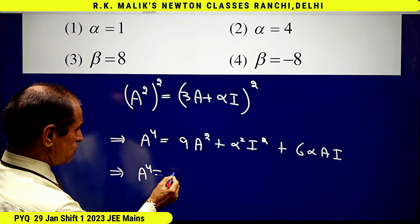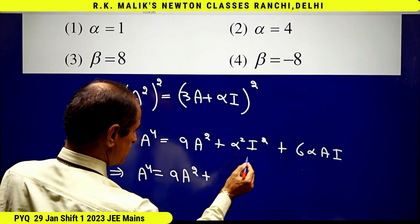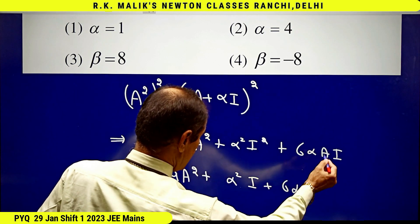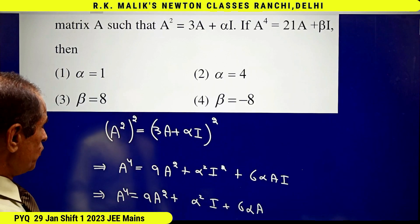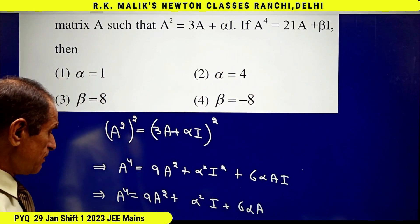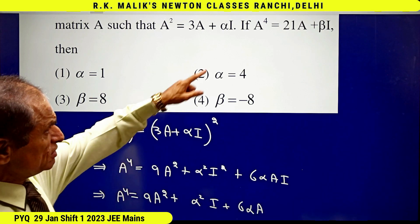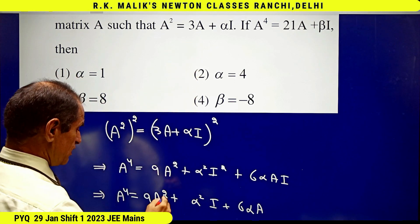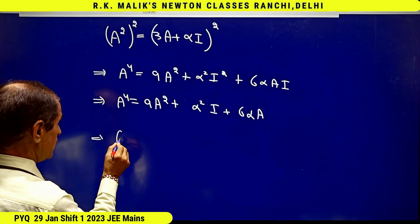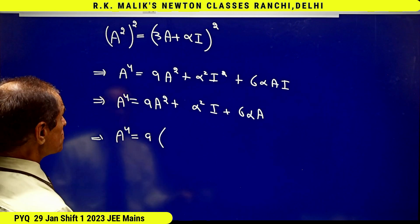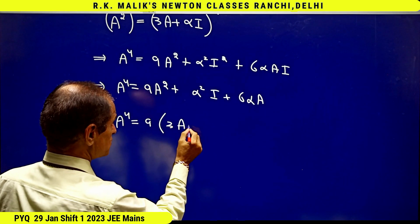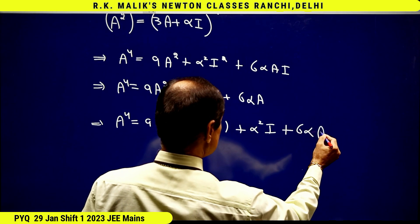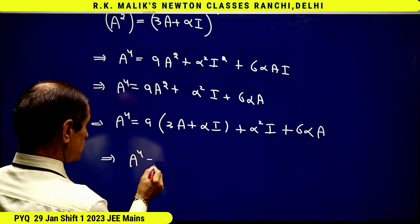That is A to the power 4 is equal to 9A squared plus alpha squared I, since I squared equals I, and AI equals A. To compare with the second equation I need to eliminate A squared, so I substitute A squared equals 3A plus alpha I. This gives A to the power 4 equal to 9 times 3A plus alpha I, plus alpha I plus alpha squared I plus 6 alpha A.